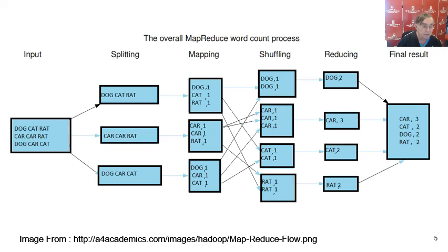Here is a picture. We have three input streams: dog, cat, rat, car, car, rat, dog, car, cat. We run them in parallel, taking each of those three and running them separately — huge amount of parallelism. Then we map, which replaces 'dog' with 'dog, 1' and 'cat' with 'cat, 1', to say there is one occurrence of that word. We can produce 'car, 2' or keep them as separate 'car, 1' entries. Then in the reduction phase, after shuffling — all the dogs joined together, all the cars, and so on — the reduction counts the number of dogs, cars, cats, and rats. We get two each for cat, dog, and rat, and three cars.